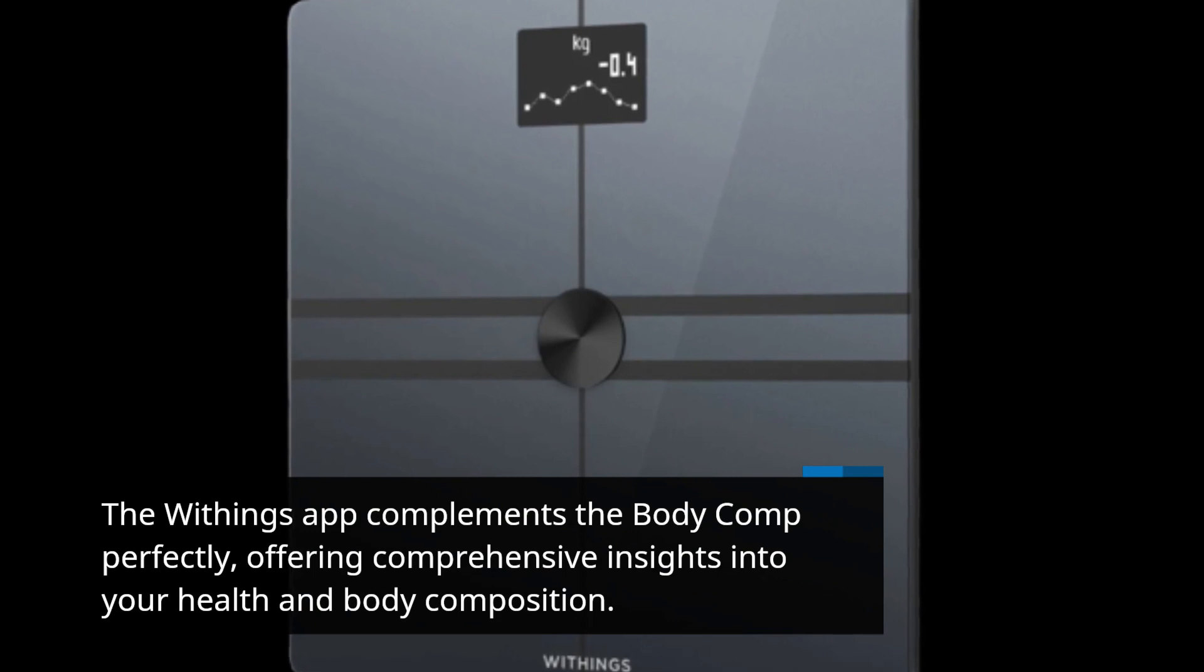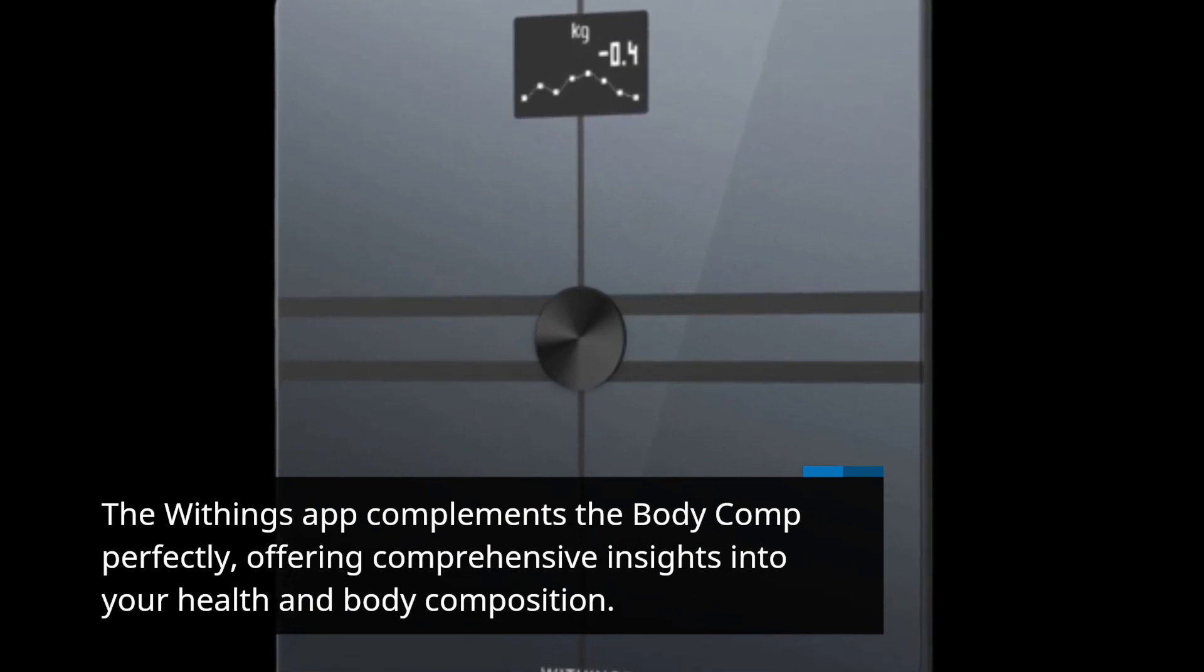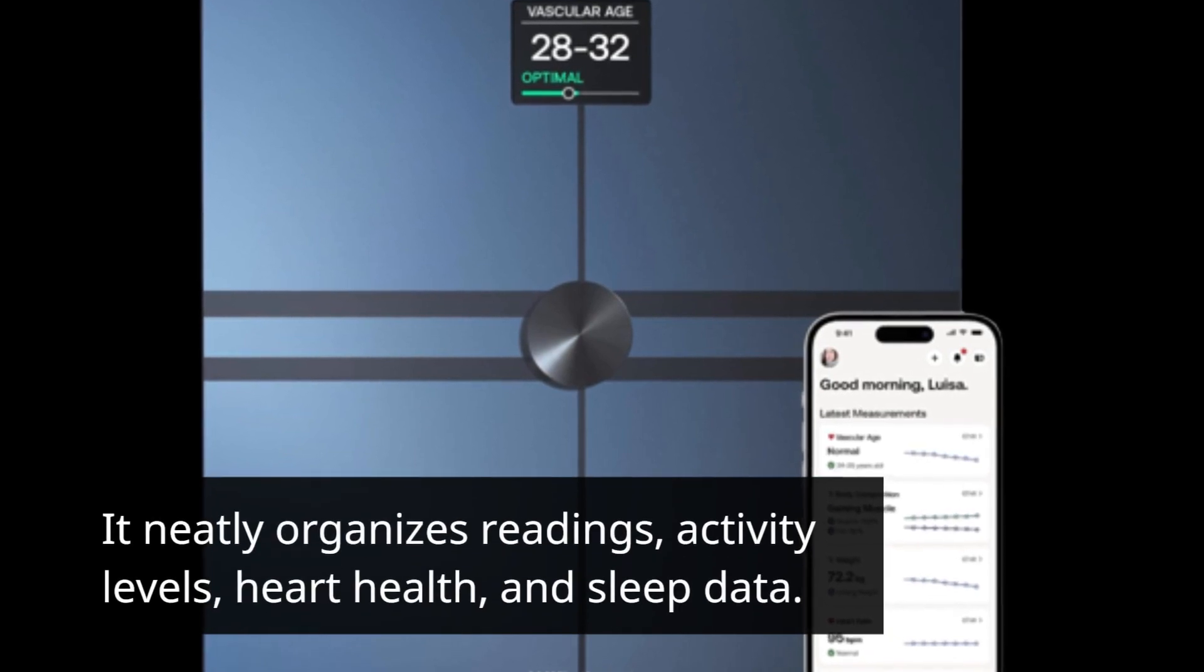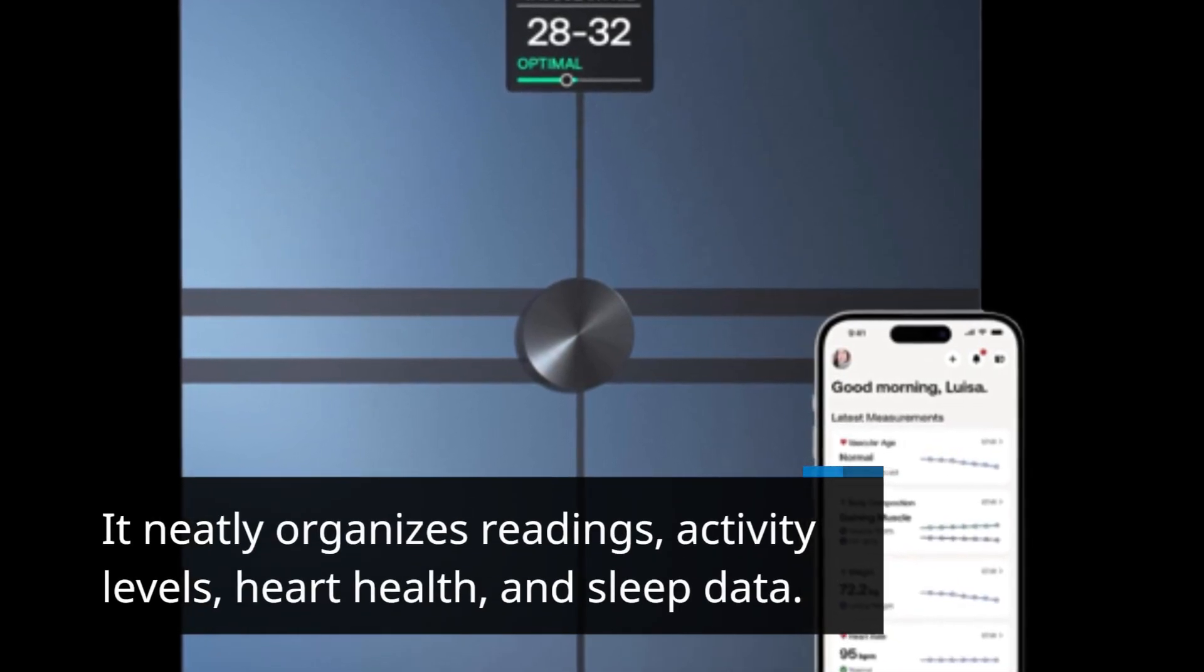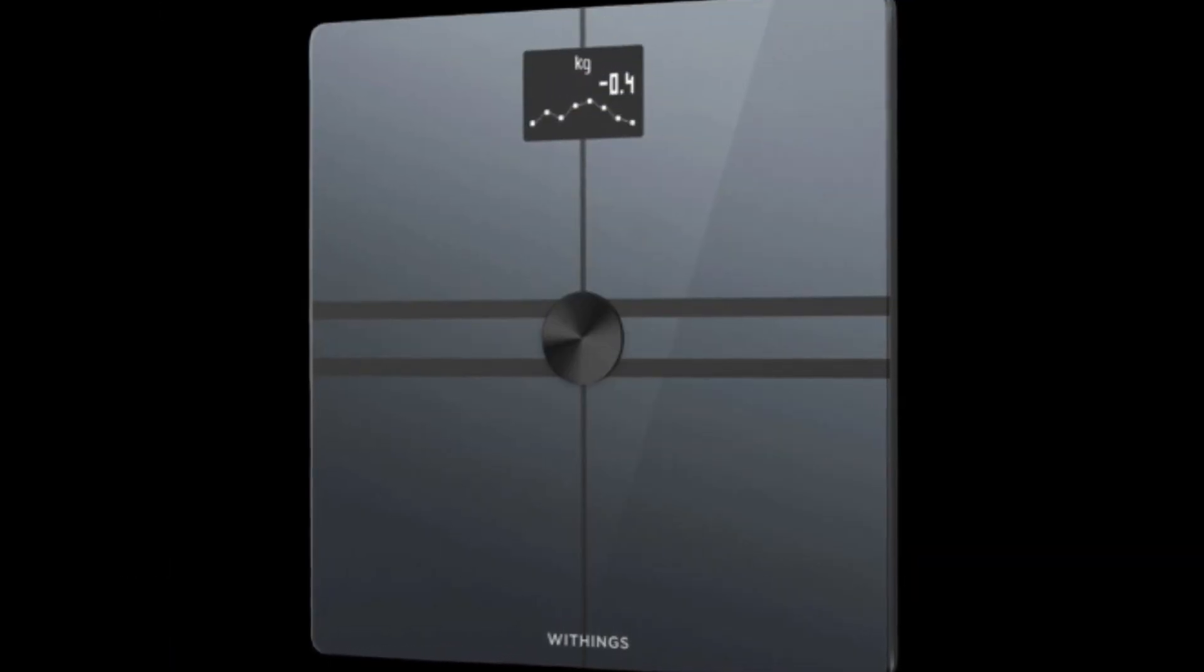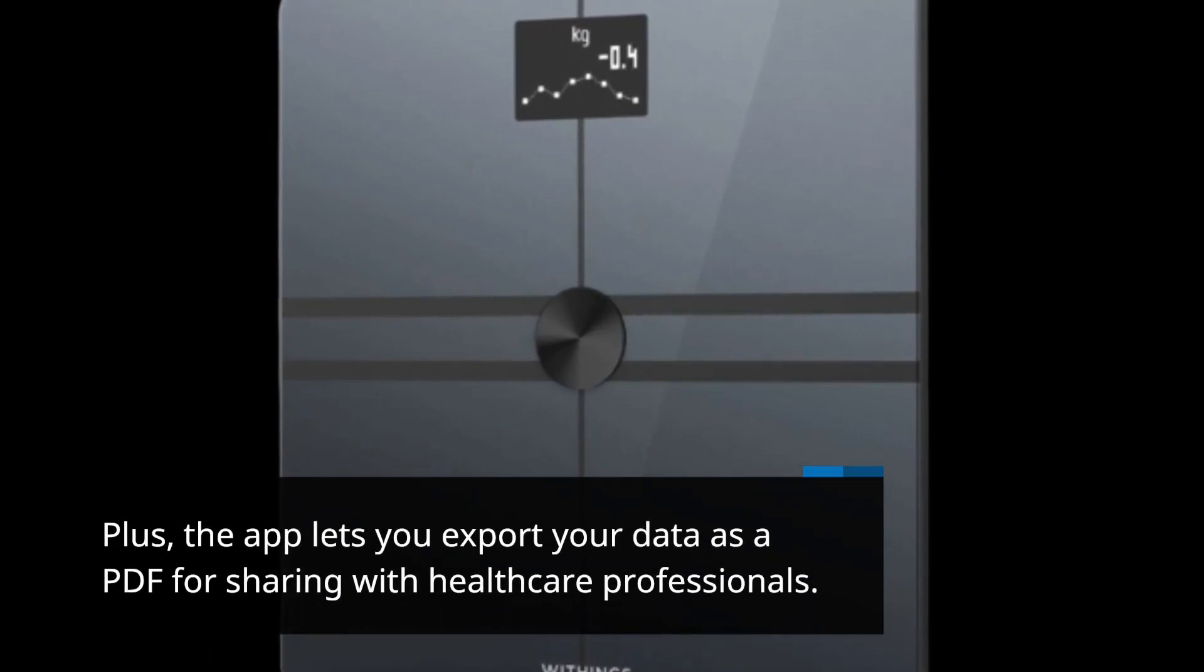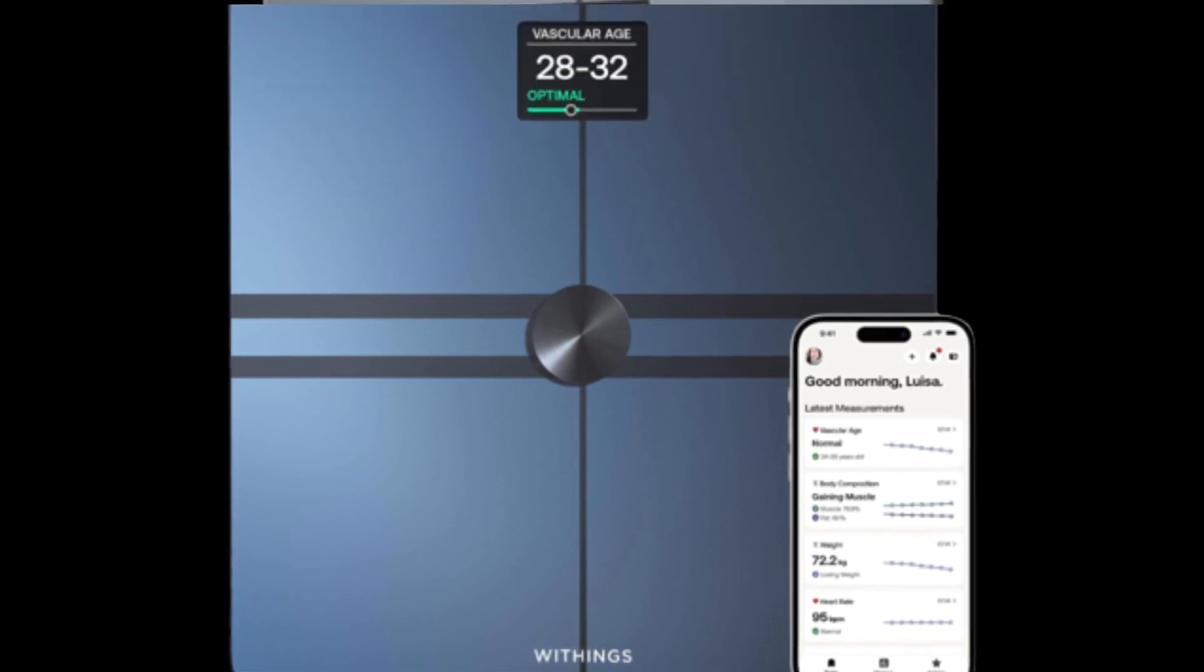The Withings app complements the Body Comp perfectly, offering comprehensive insights into your health and body composition. It neatly organizes readings, activity levels, heart health, and sleep data. Plus, the app lets you export your data as a PDF for sharing with healthcare professionals.